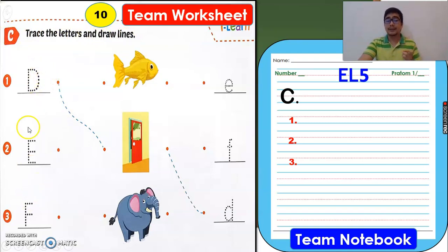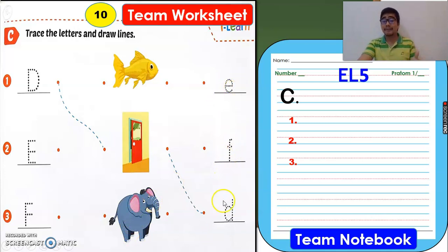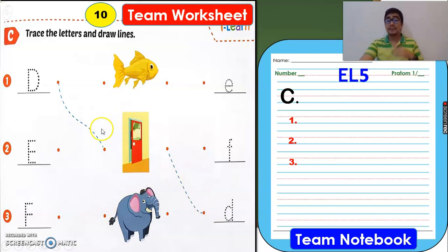As you can see, on this side we have big letters D, E, and F. At the center, we have pictures of fish, door, and elephant. On this side, we have small letters E, F, and D. All you have to do is find the correct picture that begins with the letter D, E, or F. So let's start with the letter D.